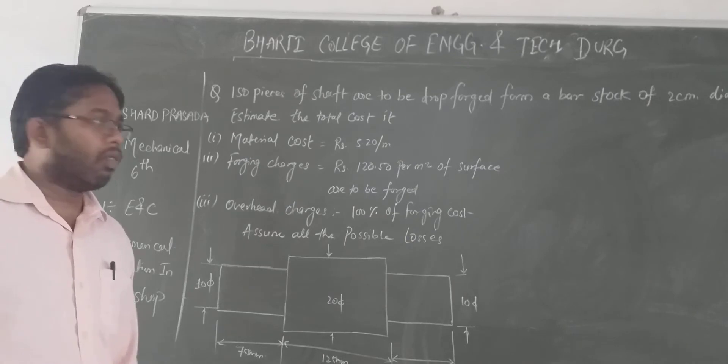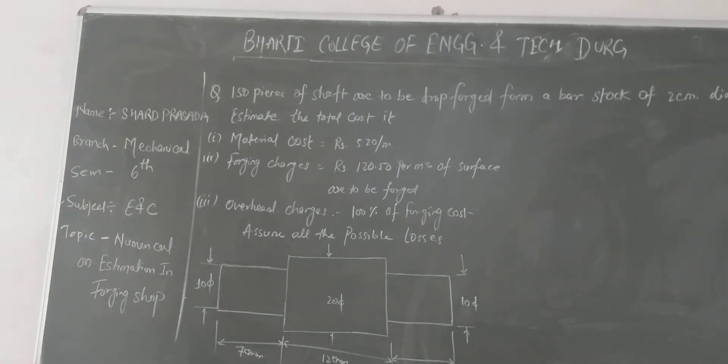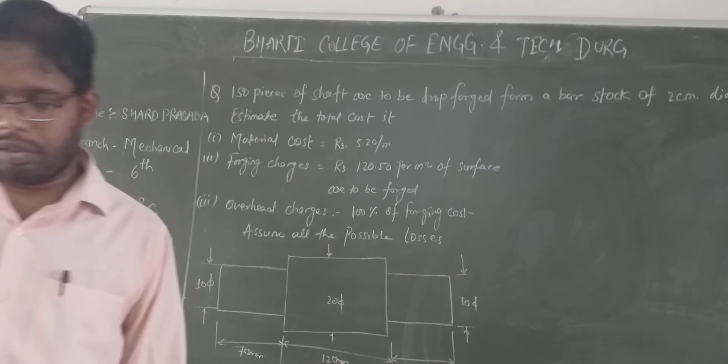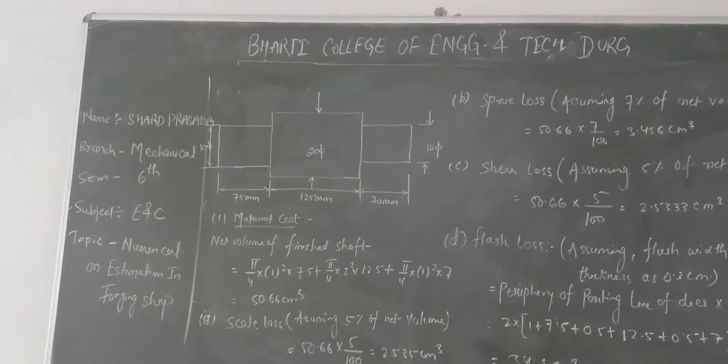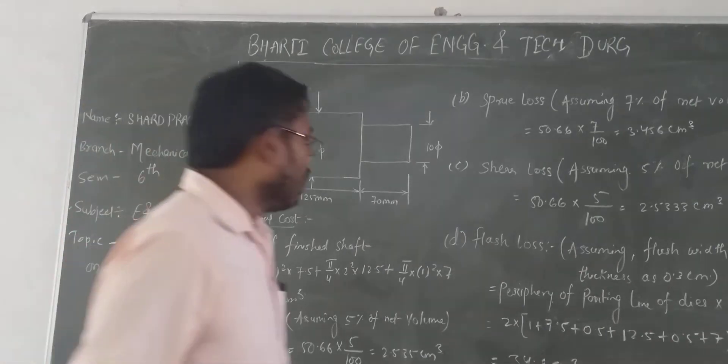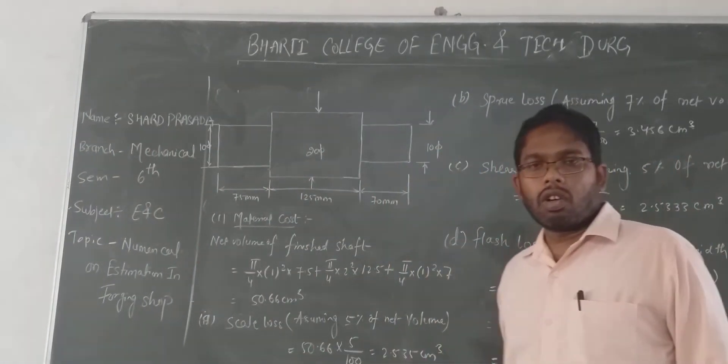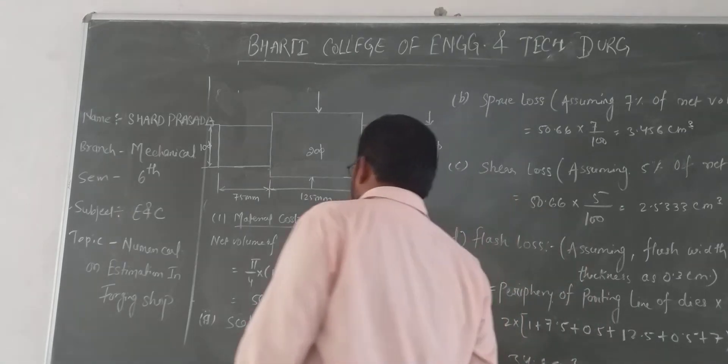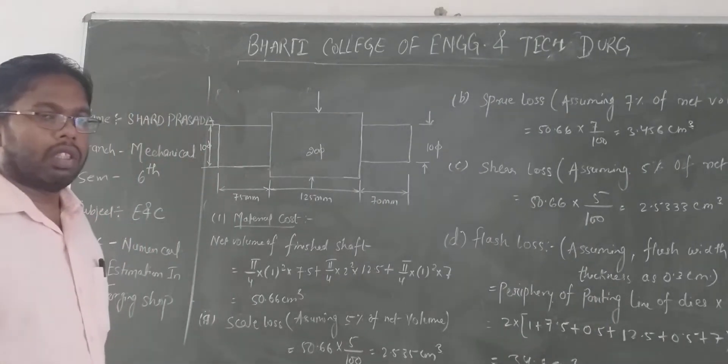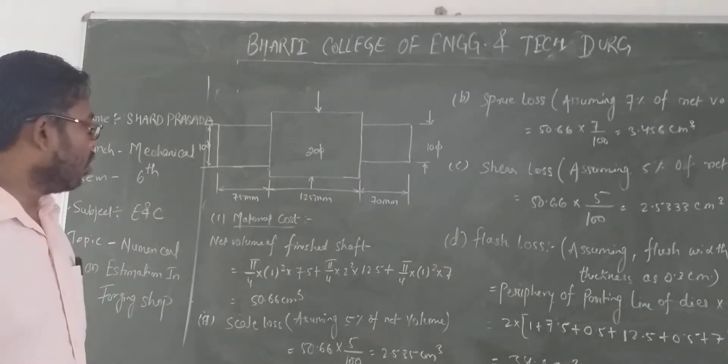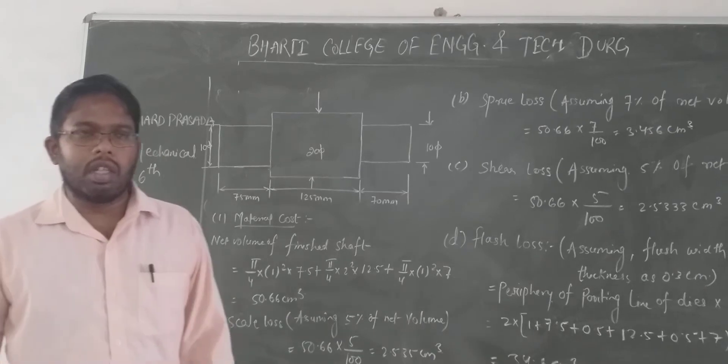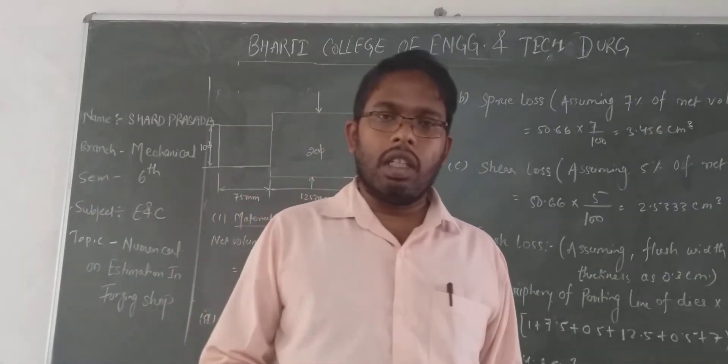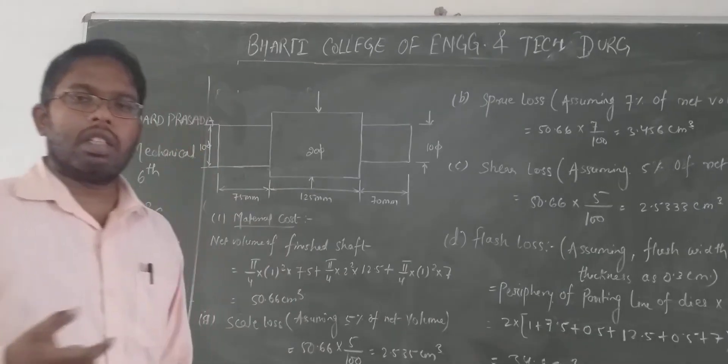We have to find the total cost. First, net volume. Net volume is π/4 × d² × l, where area multiplied by actual length equals volume.